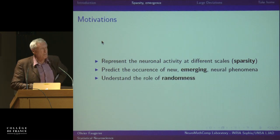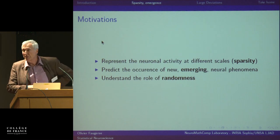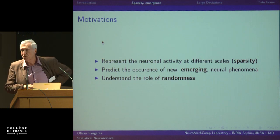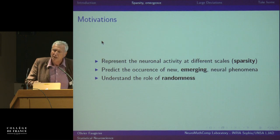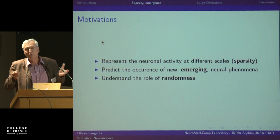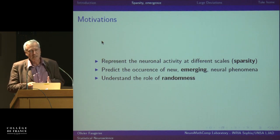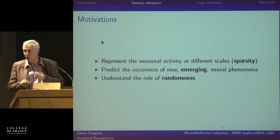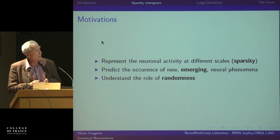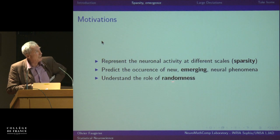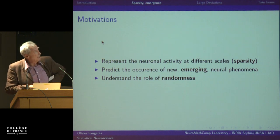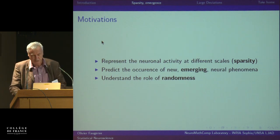Another very important point is understanding the role of randomness. The brain is really a stochastic machine. If you look at what happens at the level of ion channels, there are lots of fluctuations due to thermal noise, and these fluctuations can completely change the dynamics of individual neurons and therefore of populations of neurons. Understanding the role of noise is key — and noise here is not a bug, it's a feature, as we say in computer science.